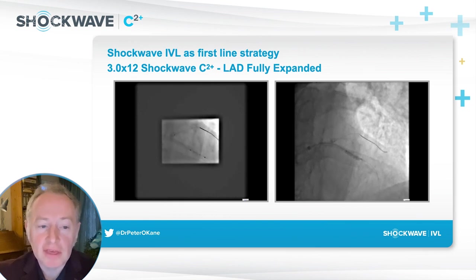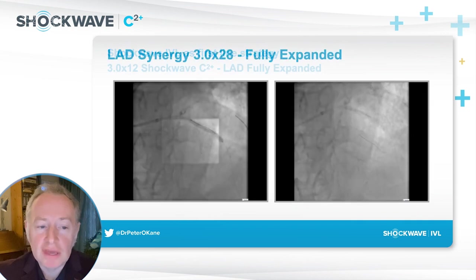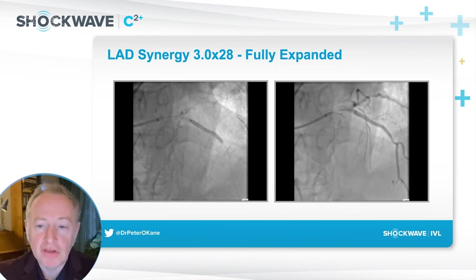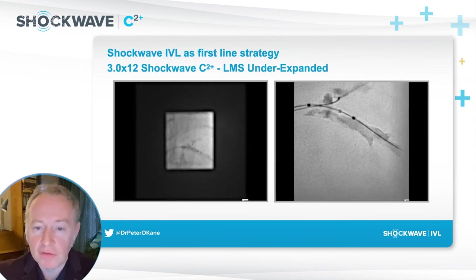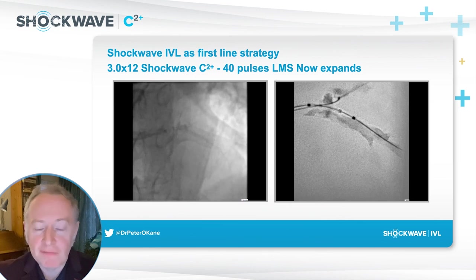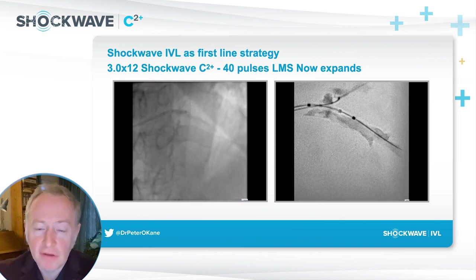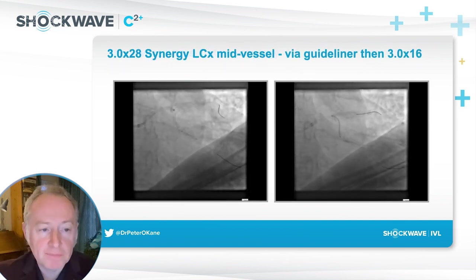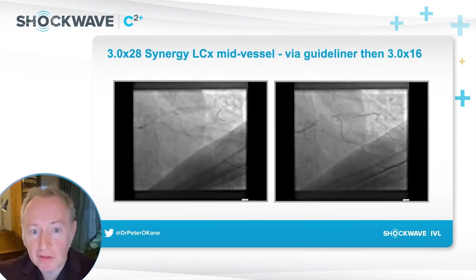We then go ahead and treat the mid-proximal LAD with a Synergy stent, as mandated in the study, and that's fully expanded, which is quite reassuring. We've still got the left main to deal with next, so we take the balloon back — we have 40 pulses left. Despite this being undersized relative to the left main, it is quite effective: initially being underexpanded, but after 40 pulses it fully expands. You can see the calcium burden there on the fluoroscopy.